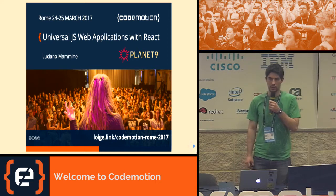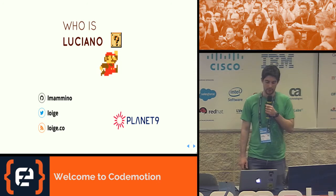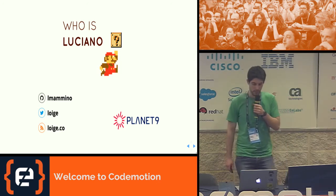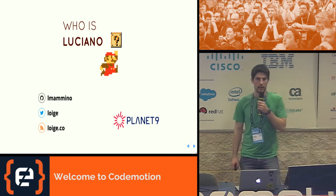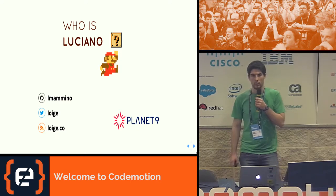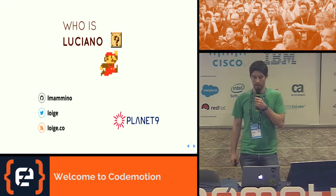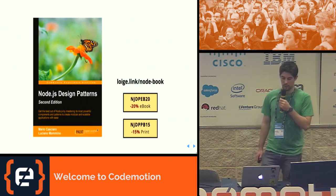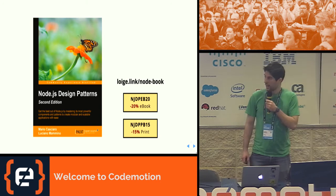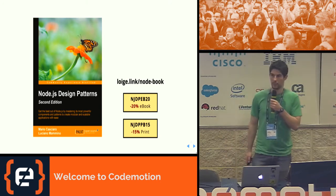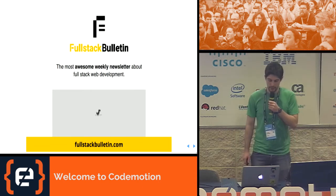If you want to know who Luciano is, you can follow me on GitHub, on Twitter, and I also have a blog. I am a full stack engineer. I work for Planet 9 Energy in Dublin — Planet 9 is a company building a trading platform for the energy market in the UK. We work a lot with big data but also do a lot of cool things with serverless. I'm also the co-writer of Node.js Design Patterns — Mario Cacciaro is the original author and we worked together on the second edition.